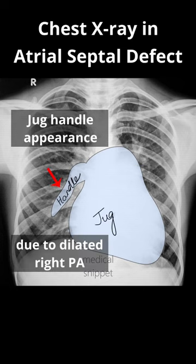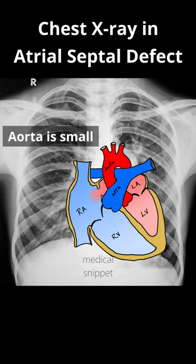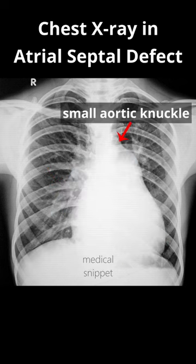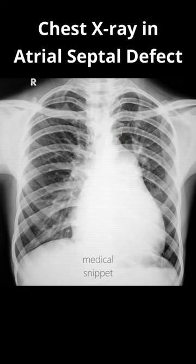As more blood is shunted to the pulmonary circulation, there is a chronic decrease in systemic cardiac output, so the aorta is smaller in size. It is seen as a small aortic knuckle in the chest X-ray. To see more videos like this, subscribe to the Medical Snippet channel.